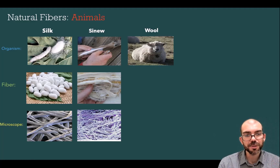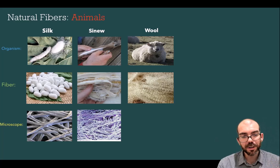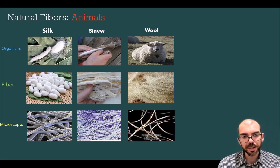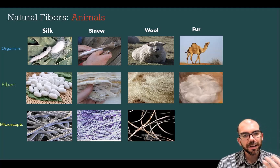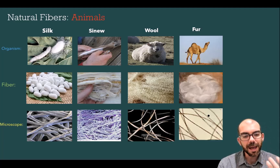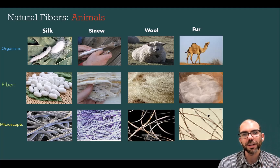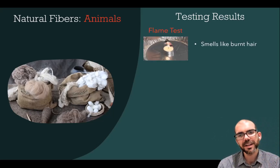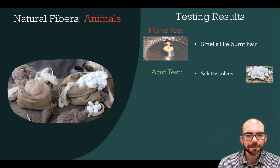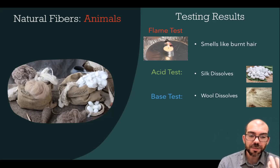Wool is obtained from sheep and made from their fur. Under the microscope it has a little bit of a spiral to it — not as dense as the other two fibers and a unique color. With animal furs there are a huge variety; for example, camel fur looks distinctly different under the microscope. A flame test on animal fibers will produce a flame that smells like burnt hair. If you treat the fiber with acid and it dissolves, it's probably silk. And if you treat it with a base and it dissolves, that's wool — the only animal fiber that dissolves in base.